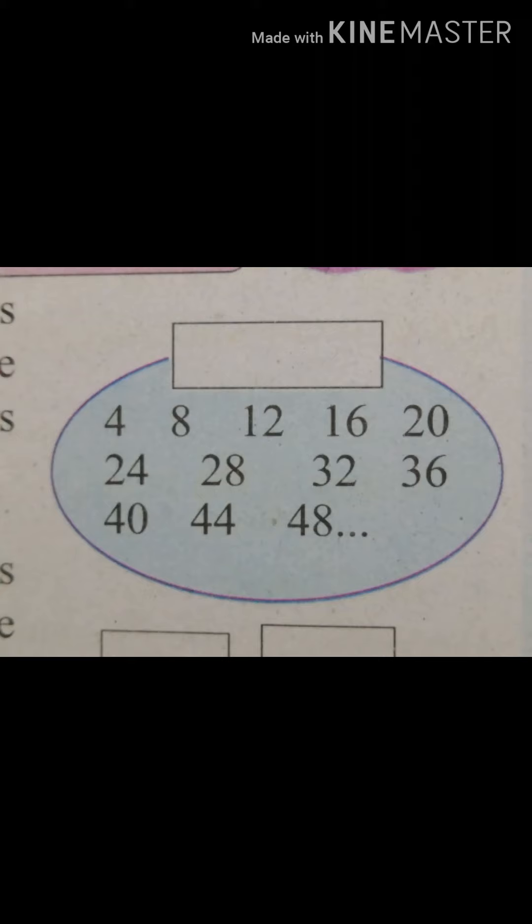The multiples of 4 are: 4, 8, 12, 16, 20, 24, 28, 32, 36, 40, 44, 48 and so on. Very good. These are multiples of 4 because we have the 4 times table.